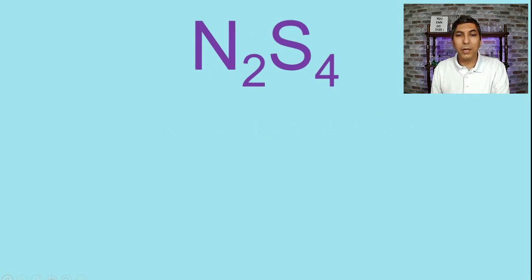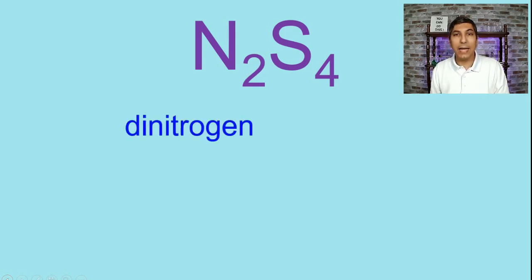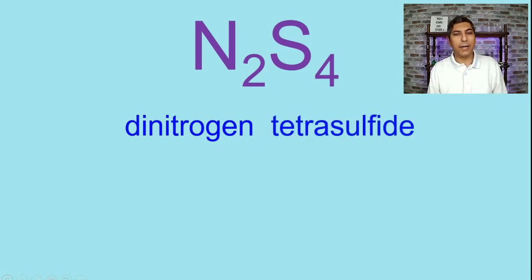We can take a look at another one, N2S4. How would you name this compound? Well, N of course is nitrogen, and we have two atoms of that. So that's going to be dinitrogen. And then we have four sulfur atoms. And so four is tetra. And sulfur, we change its ending to IDE. So that becomes tetrasulfide. So the name of this compound is dinitrogen tetrasulfide.